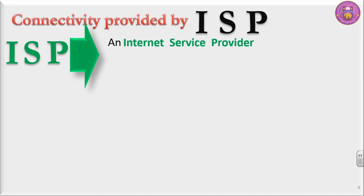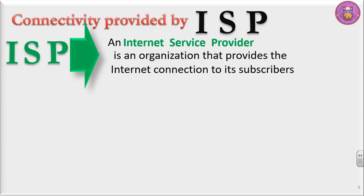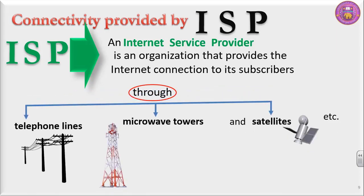An ISP is an internet service provider. It is an organization that provides the internet connection to its subscribers through telephone lines, microwave towers and satellites by charging a fee for its services. ISP is an organization which provides connectivity to the internet and those who avail this particular service pay for it to the service provider.